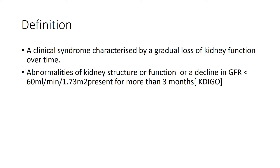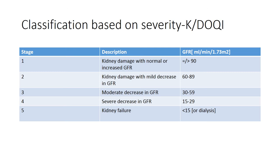Of note, they include abnormalities of structure. So if you have a patient with dysplasia of the kidney, that patient has had it for more than three months — that's known as chronic kidney disease. If your patient has abnormal function, like persistent proteinuria or persistent hematuria for more than three months, that's also chronic kidney disease.